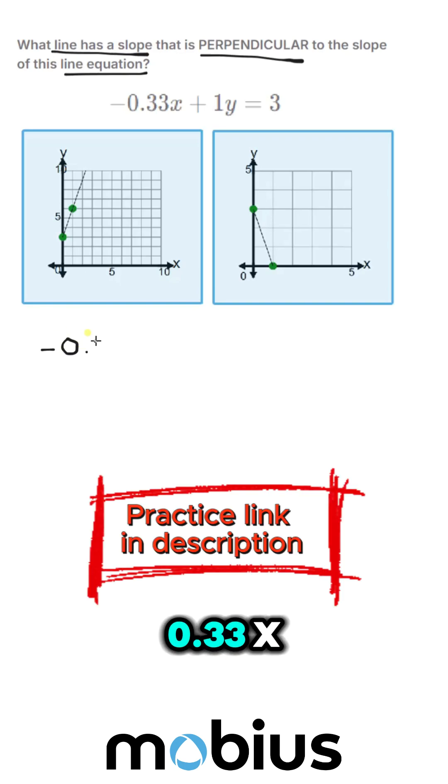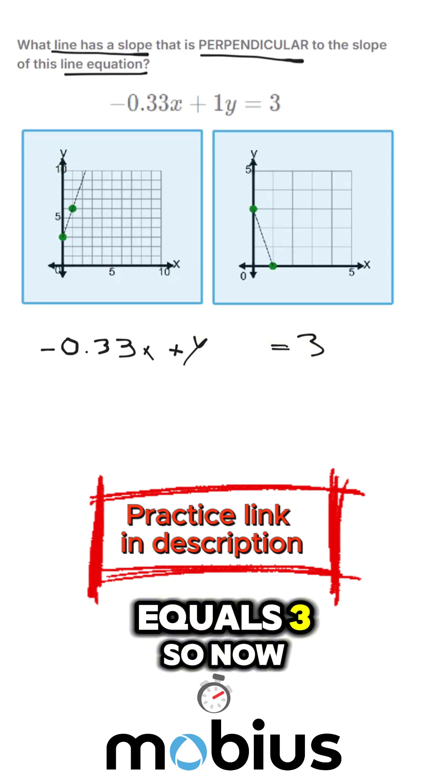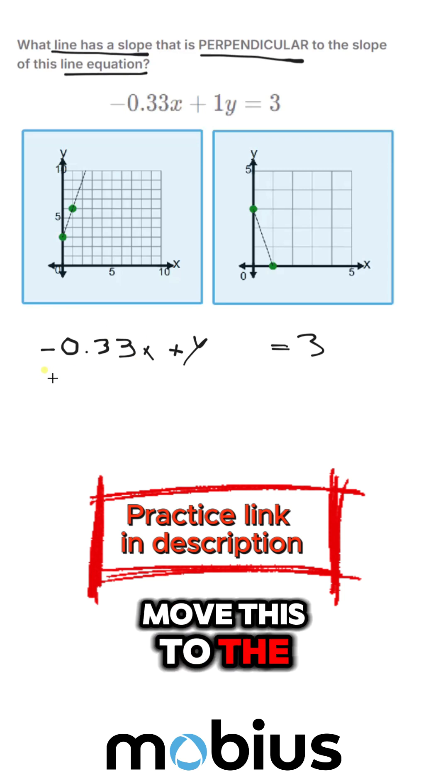We've got negative 0.33x plus 1y or just y equals 3. So now we've got to get rid of this, move this to the other side.